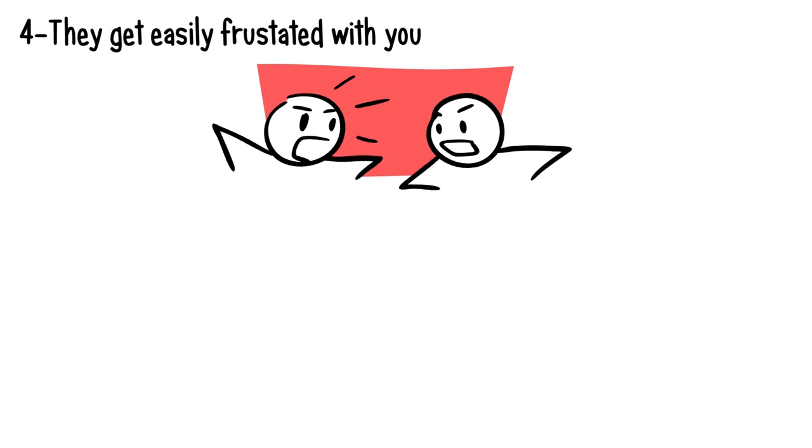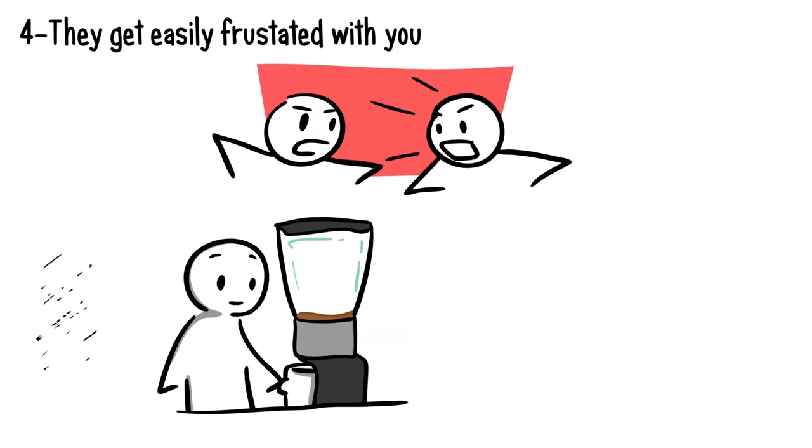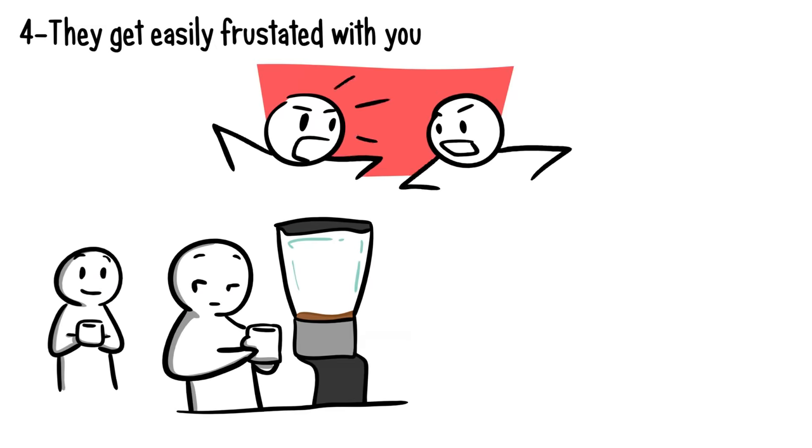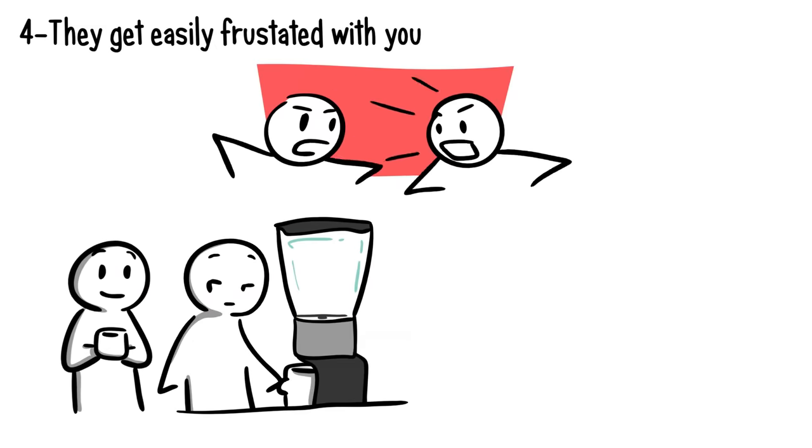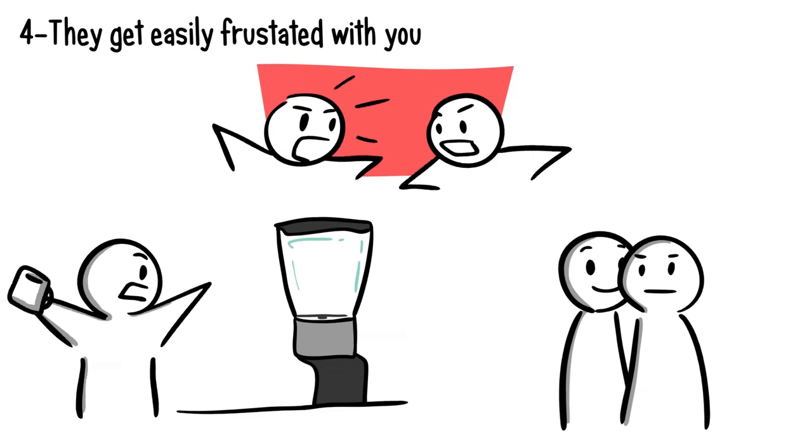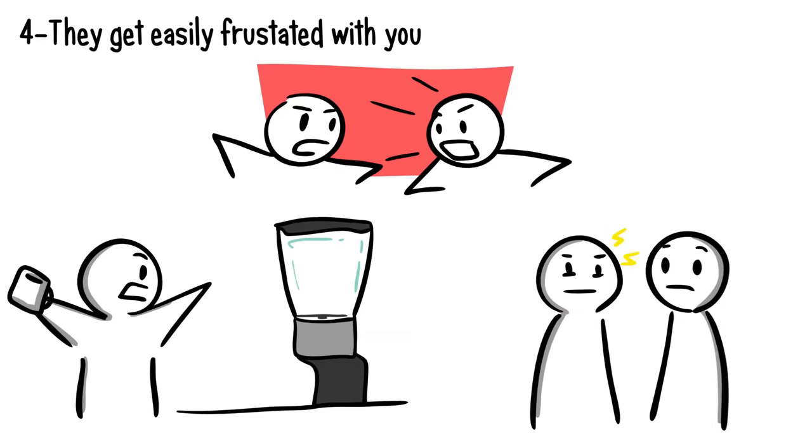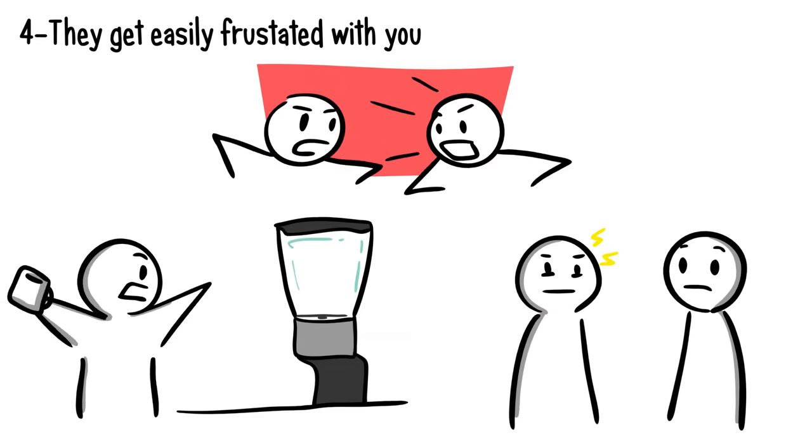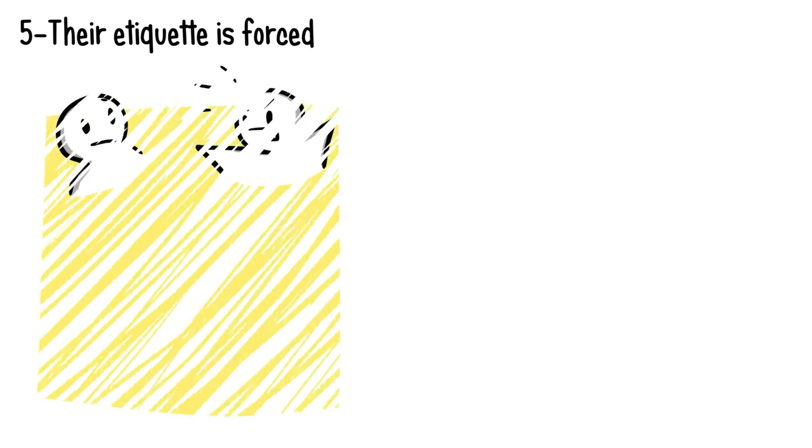Number four: they get easily frustrated with you. Do the two of you argue or disagree over matters on a daily basis? When someone dislikes you, they'll do anything except make things easy for you. They might have been in a good mood, but once they interact with you, they turn sour, bitter, and angry.